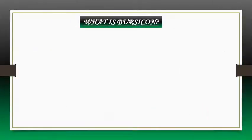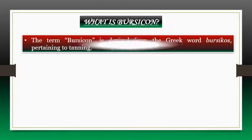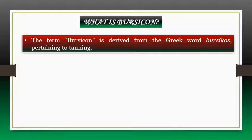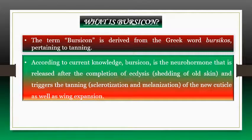Before going into detail about the function of Bursicon, let me answer the question: what is Bursicon? The term Bursicon is derived from the Greek word 'bursikos,' pertaining to tanning. According to current knowledge, Bursicon is the neurohormone that is released after the completion of ecdysis — shedding of old skin — and triggers the tanning process, sclerotization and melanization of the neocuticle, as well as wing expansion.